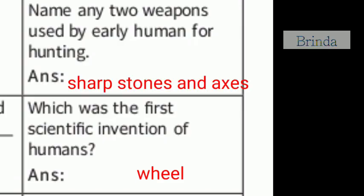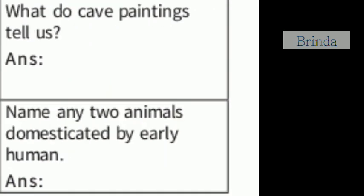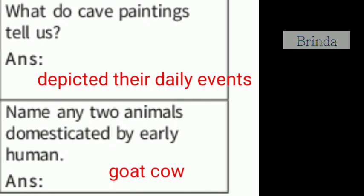Name any two weapons used by early humans for hunting: sharp stones and axes. Which was the first scientific invention of humans? The wheel. What do cave paintings tell us? They depicted the daily events of early humans. Name any two animals domesticated by early humans — you can say goat, cow, and so on.